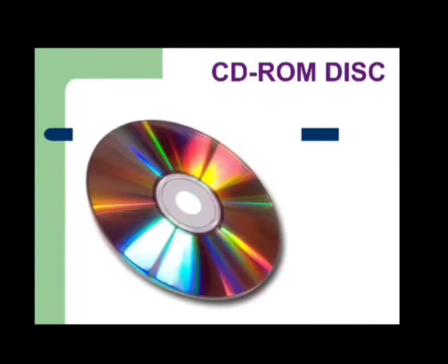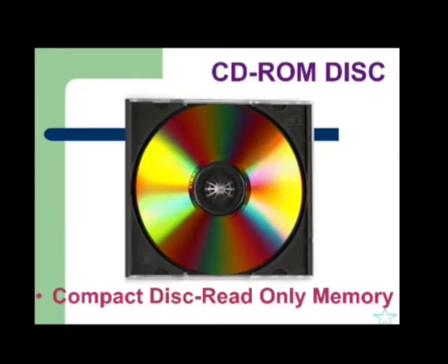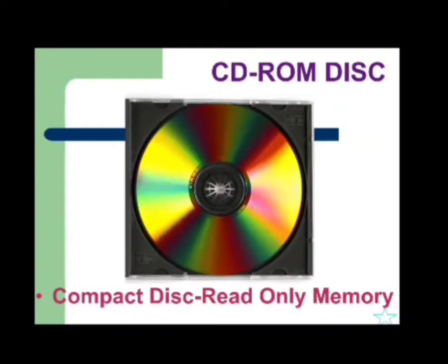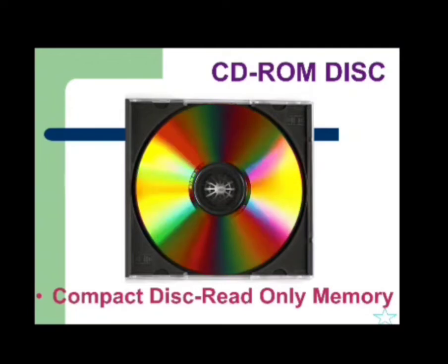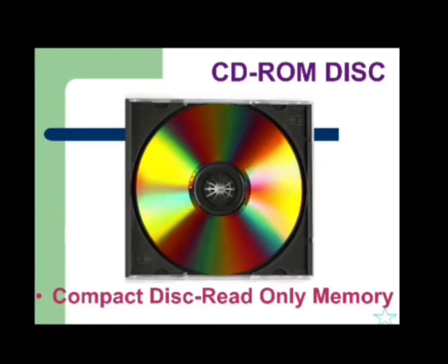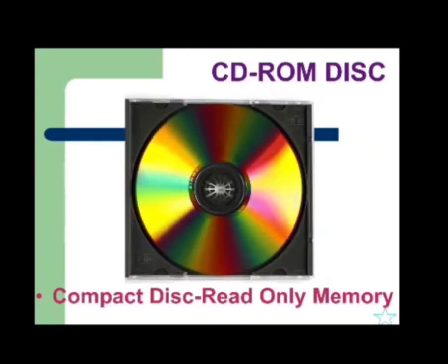Next is CD-ROM disk. A CD-ROM is a circular shaped disk that is used to store data. The full form of CD-ROM is Compact Disk Read Only Memory. A CD-ROM is also called a portable disk, with the help of which you can transfer data from one computer to another.